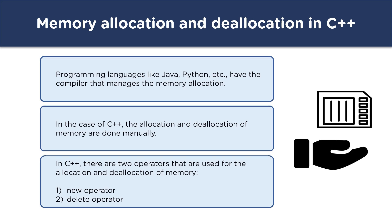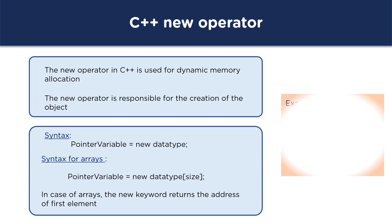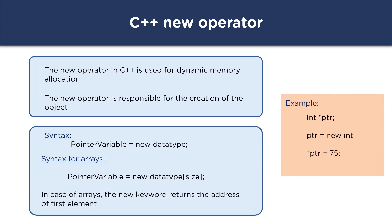Let's understand the new operator in C++. The new operator is used for dynamic memory allocation — it allocates memory at runtime. The general syntax is: pointer variable equals new data_type. For arrays, after the data type we write the size inside brackets specifying the number of elements. In the example, we first declare a pointer ptr of int data type, then dynamically allocate memory using the new keyword, and finally assign the value 75 to the allocated memory.